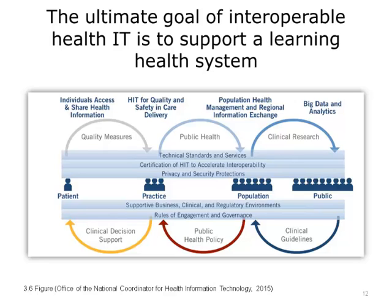The ultimate goal of interoperable health IT is to support a learning health system. This diagram shows the health IT ecosystem as a learning health system. It shows interoperability between a patient's personal health record, an EHR, health information exchanges, and large-scale analytics systems for determining and sharing clinical guidelines, informing public health policy, and supporting clinical decisions. Information is securely shared across the ecosystem with the ultimate goal of supporting effective decision-making and improved health outcomes.